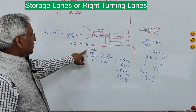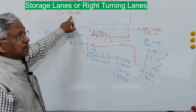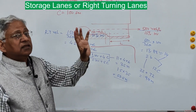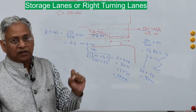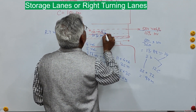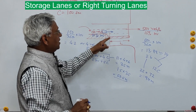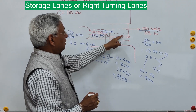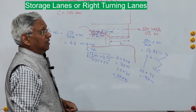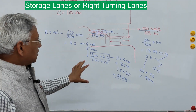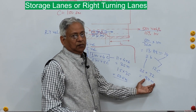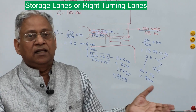These 5 right turning vehicles are arriving every 100 seconds, but in the through lane, 5 vehicles can arrive in 35 to 36 seconds. So after about 40 seconds, there will be a vehicle in the through lane going straight, and if the storage lane is not completely clear, the next vehicle wanting to turn right will not be able to move to the right turning lane. Therefore, it is suggested that the length of the storage lane should not be less than this value — provide approximately 95 meters as the length of the storage lane.